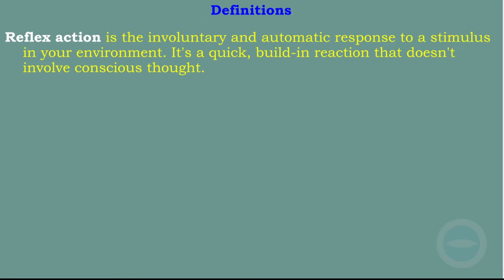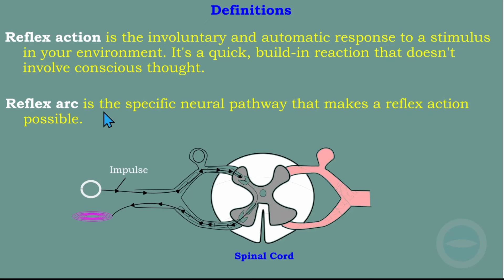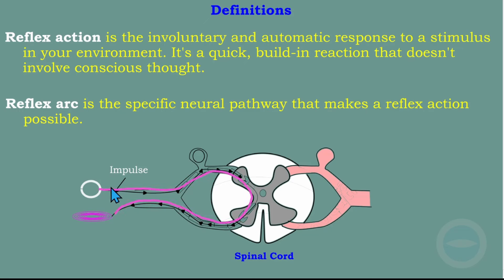The next definition is the reflex arc. The reflex arc is the specific neural pathway that makes a reflex action possible. So the reflex arc is the pathway — it makes the reflex action possible, and the reflex action moves along this pathway.